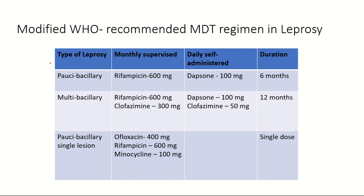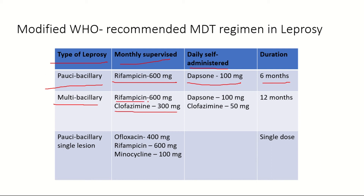The treatment is WHO-recommended multi-drug therapy, depending on the type of leprosy. For paucibacillary: rifampicin 600 mg monthly and dapsone 100 mg daily, given for six months. For multibacillary, clofazimine is added: rifampicin 600 mg and clofazimine 300 mg monthly, plus dapsone 100 mg and clofazimine 50 mg daily, given for a complete year. For paucibacillary with a single lesion (tuberculoid form), a single dose of ofloxacin 400 mg, rifampicin 600 mg, and minocycline 100 mg is given.